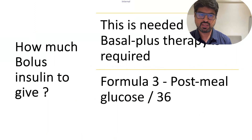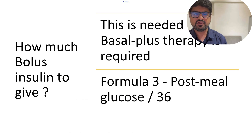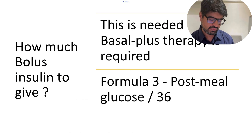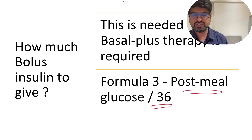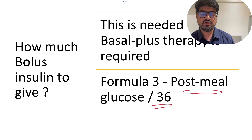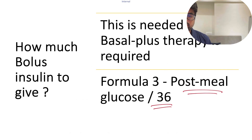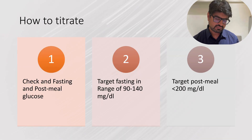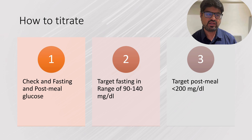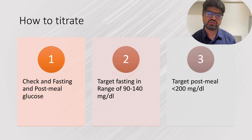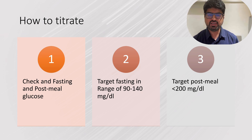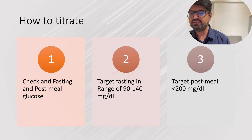For dosing the bolus insulin, a simple formula: post-meal sugar divided by 36. For example, if post-meal sugar is 360 mg/dL, then 360 ÷ 36 = 10 units to start before the meal. For titration, check both fasting and post-meal glucose — because the domino effect means fasting may also fall as post-meal improves. Target fasting 90–140 and post-meal less than 200.